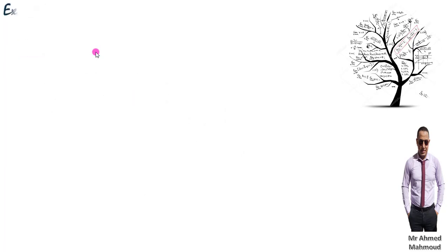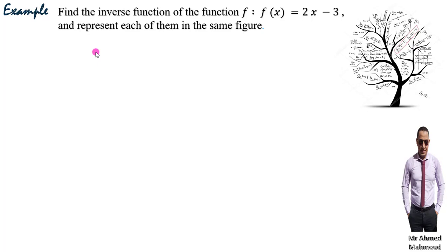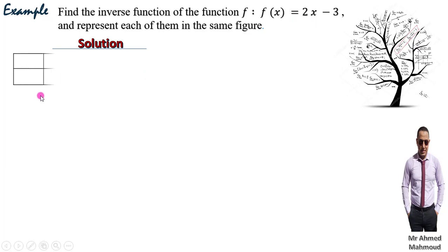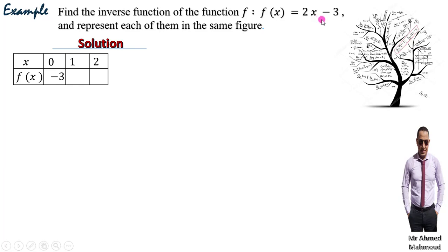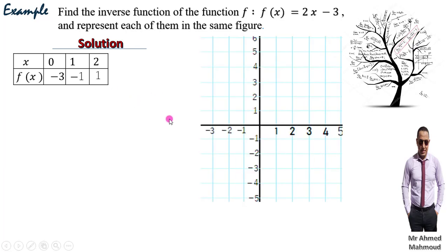Now let's take an example on the graph of the inverse function. Find the inverse of f(x) = 2x − 3 and represent each in the same figure. First we make a table: x = 0, 1, 2 gives f(x) = −3, −1, 1 respectively. We plot the points (0,−3), (1,−1), (2,1) and connect them to get a straight line.